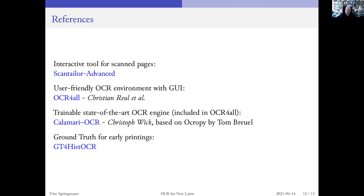And then Christoph Wick, who generalized the work from Tom Broil and made it into a state-of-the-art machine. It's incredible what he did there in a short period of time. That we have these well-working recognition models is possible because we have been able to amass a lot of so-called ground truth — that is, verified transcriptions matched against individual lines. A few years ago we published a big chunk of this on Zenodo. You can have a look at that and use it for your own purposes. If you send us more of your transcriptions, we can make available even better models.